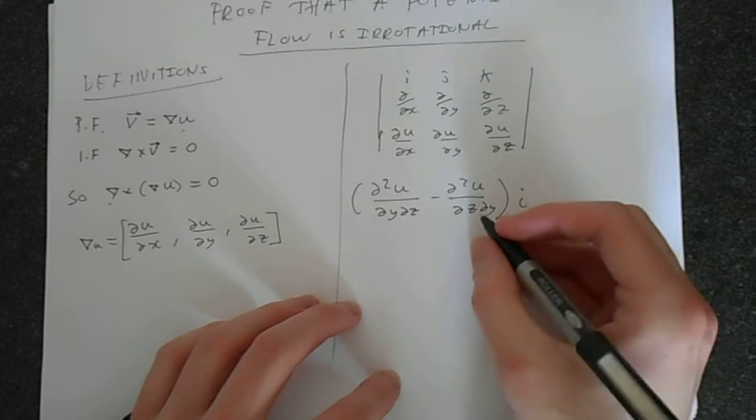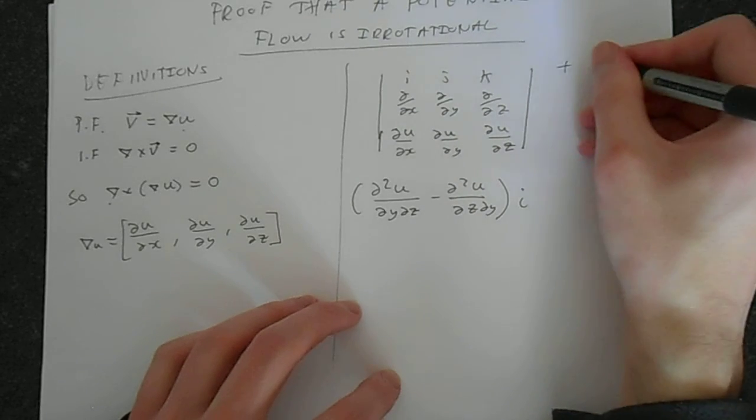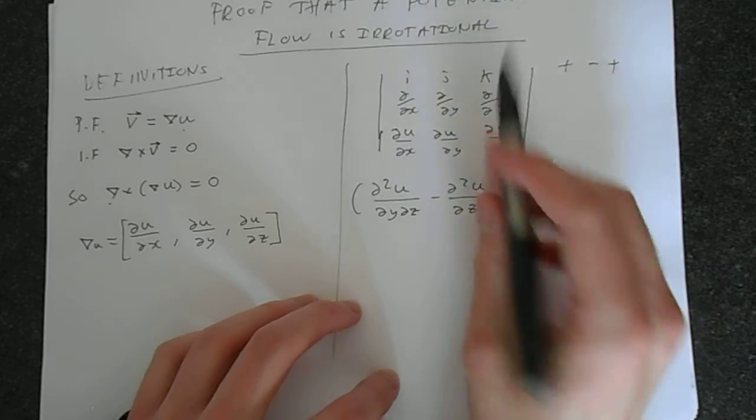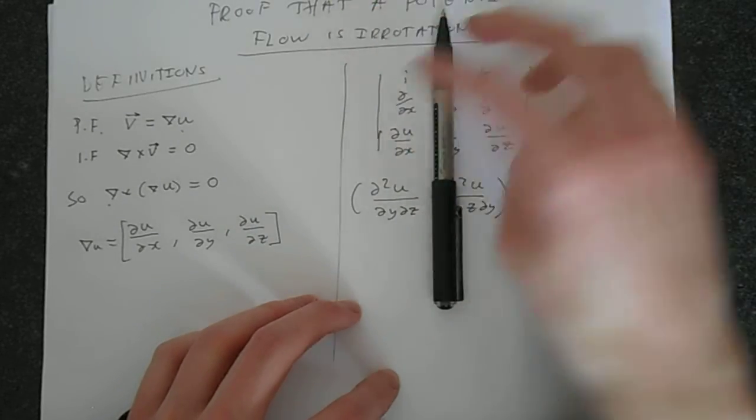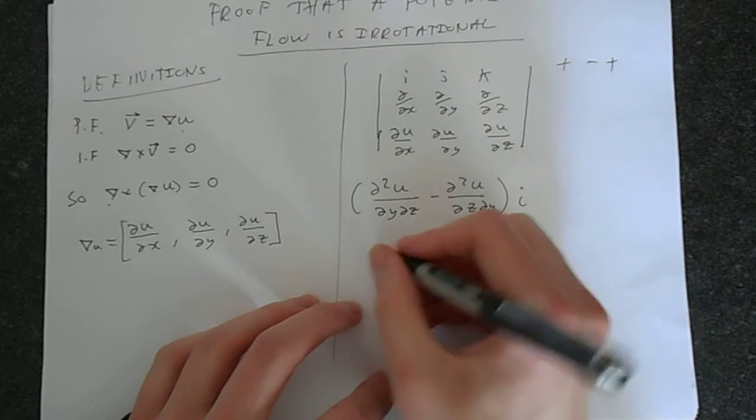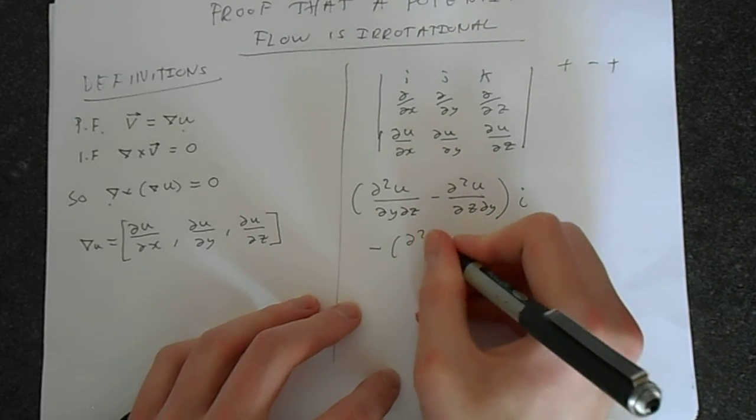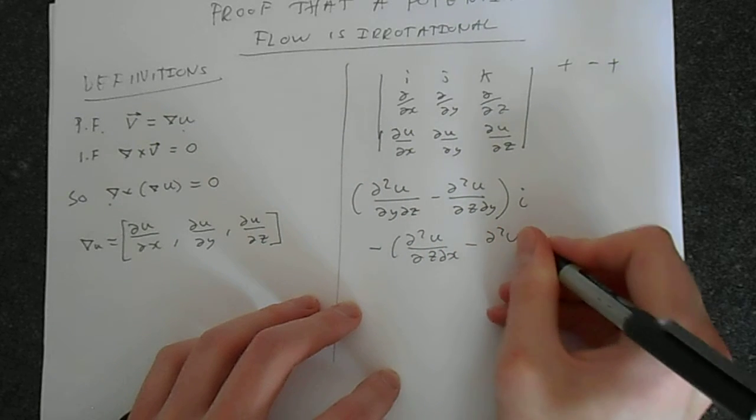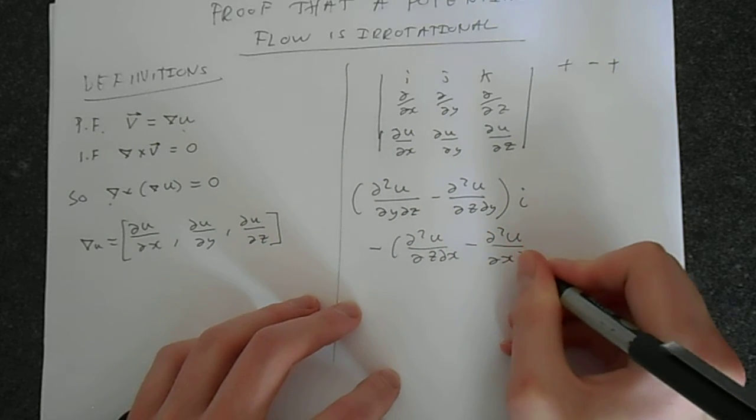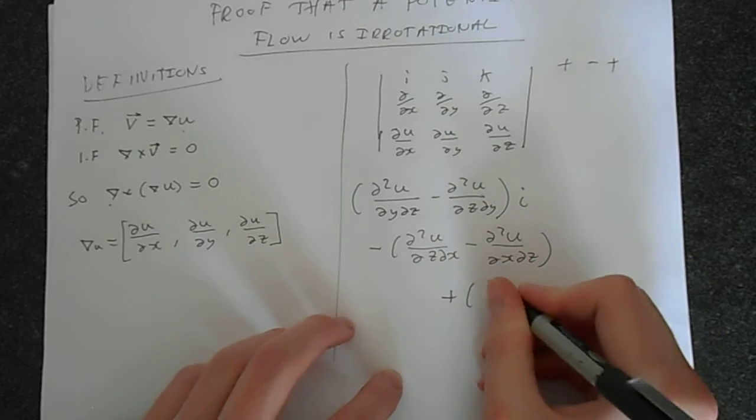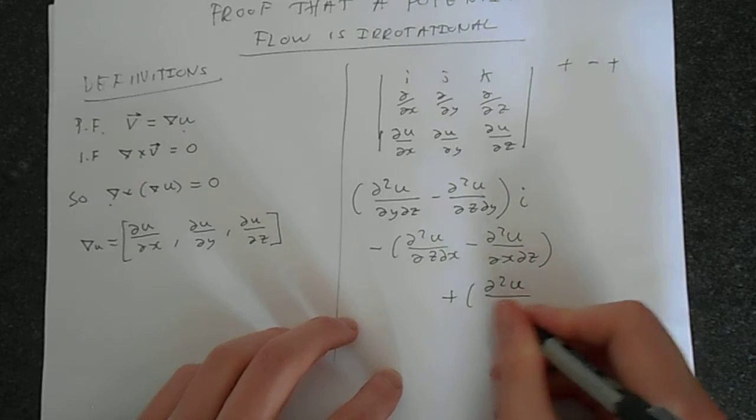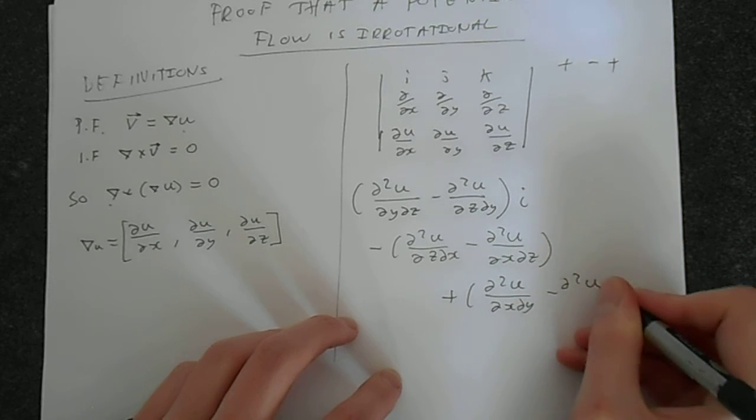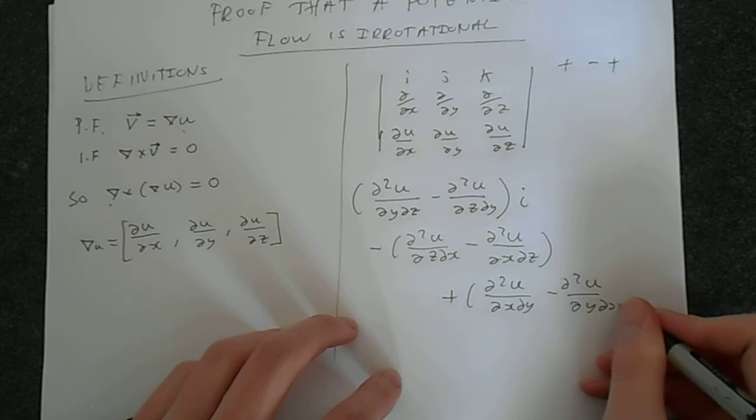And we're going plus, minus, plus. We've got this pattern here, which this follows. So the next step is this one, which gives us minus delta squared u delta z delta x, minus delta squared u delta x delta z, plus delta squared u delta x delta y, minus delta squared u delta y delta x.